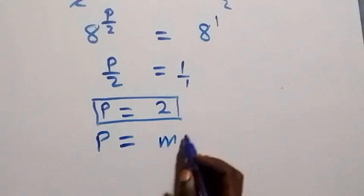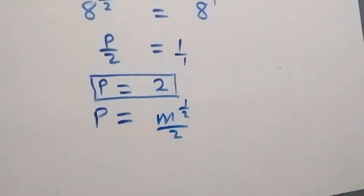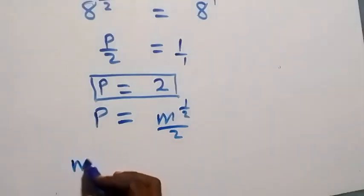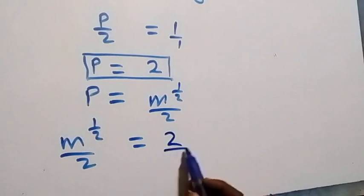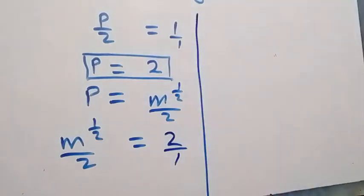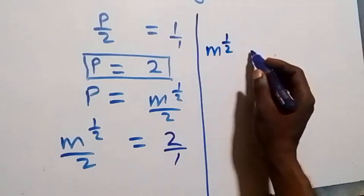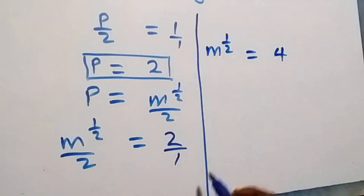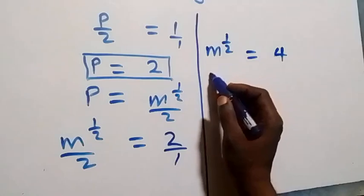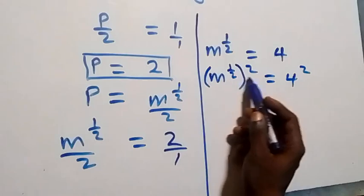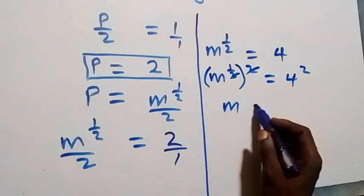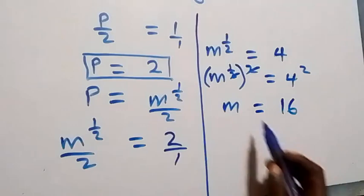Since we let p equal m raised to power half over 2, it implies m raised to power half over 2 equals 2. Cross-multiplying gives m raised to power half equals 4. To get m, we raise both sides to power 2: m raised to power half, squared equals 4 squared. The powers cancel on the left, leaving m equals 16.